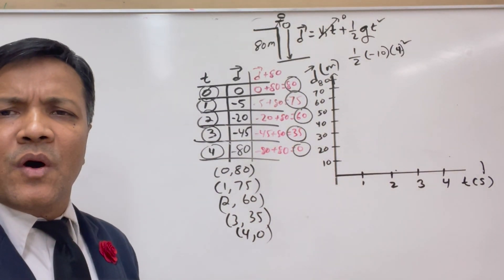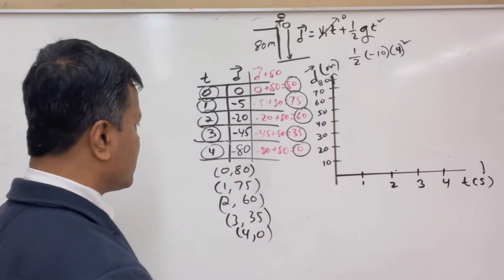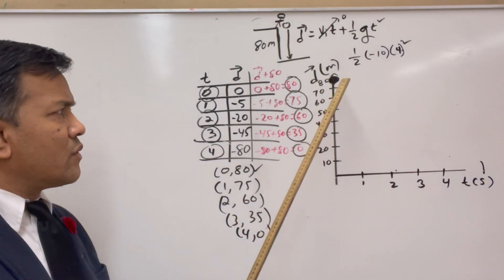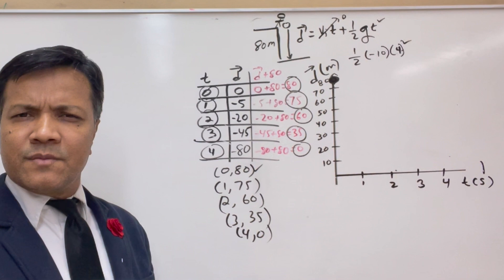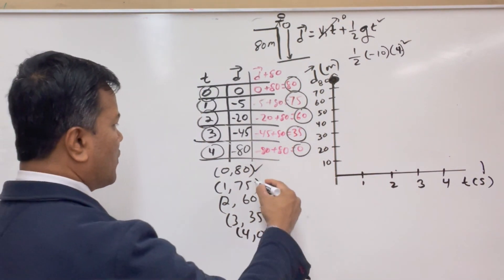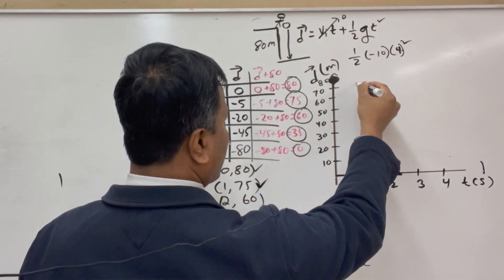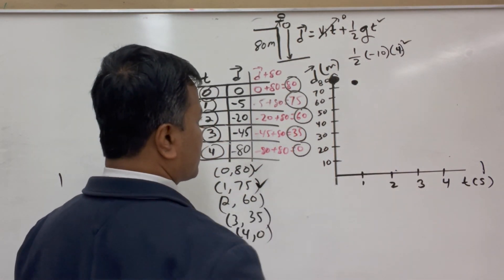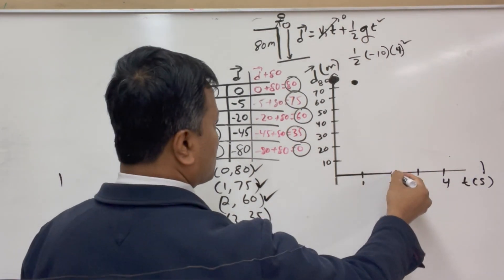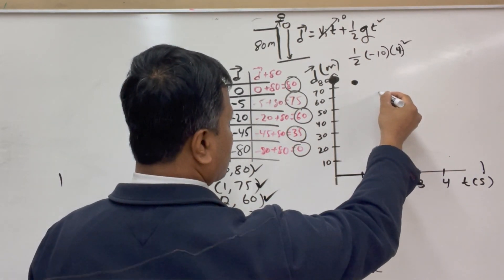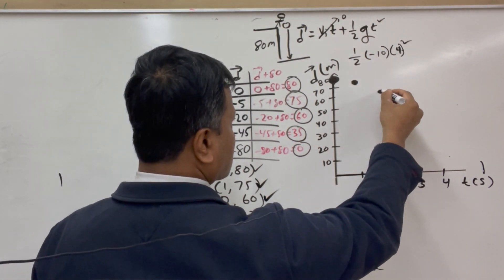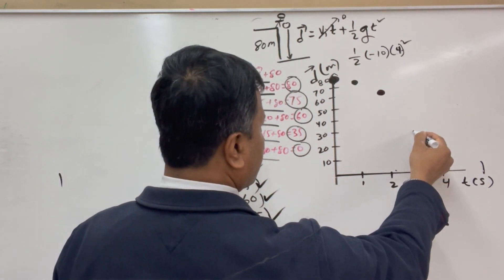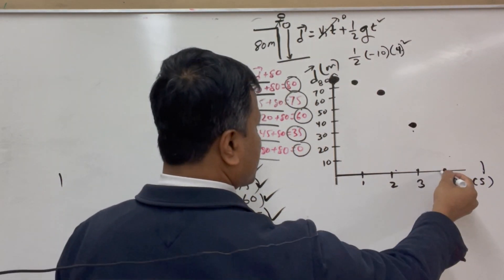So we have 5 points. Let us quickly write them: (0, 80), (1, 75), (2, 60), (3, 35), and (4, 0). Now let's graph them. Plot 0 comma 80 — make sure your point is visible. Then 1 comma 75, 2 comma 60, 3 comma 35, and 4 comma 0.